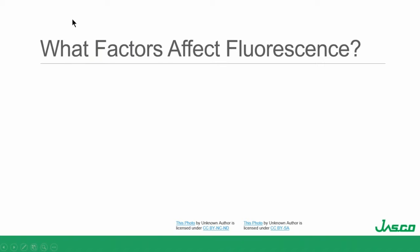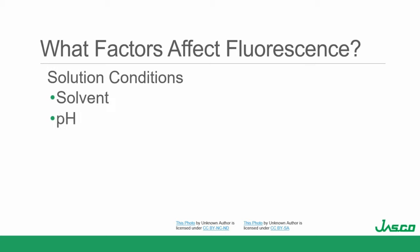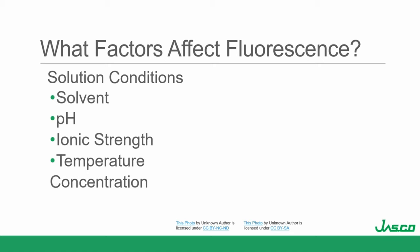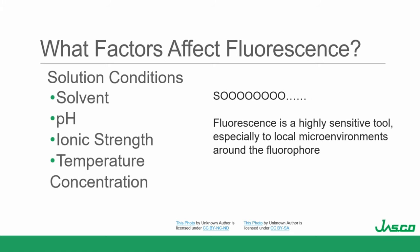What factors affect fluorescence? This is a really important question because one of the greatest advantages of fluorescence is that it's sensitive. What is it sensitive to? Solution conditions — solvent, pH, ionic strength, temperature, and especially concentration. Fluorescence is a highly sensitive tool, especially to local microenvironments around the fluorophore — we want things that are sensitive to detect changes in molecular interactions, conformations, and behaviors.